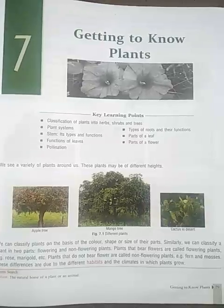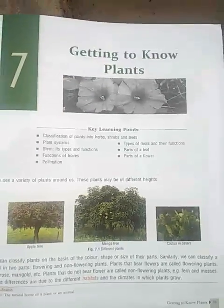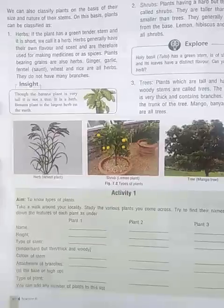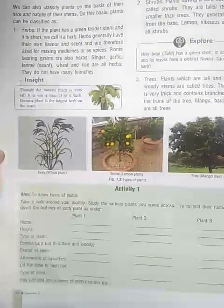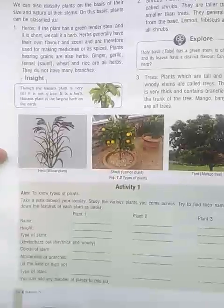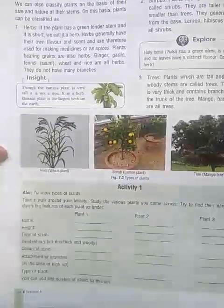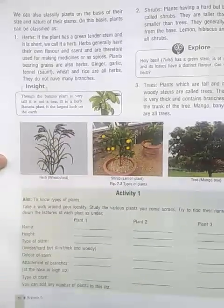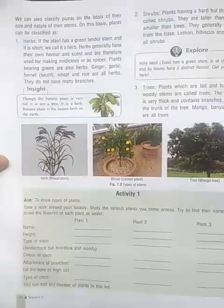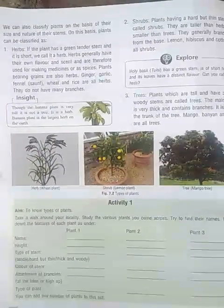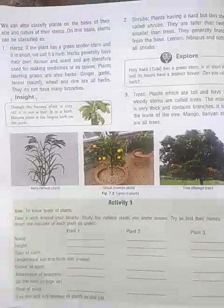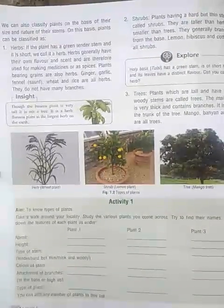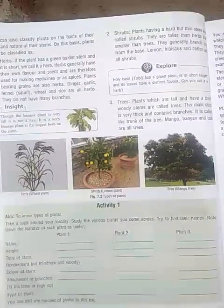We can also classify plants on the basis of their size and nature of stems. On the basis of stems, we can classify plants as herbs. If a plant has a green tender stem, it is short and we call it a herb. Herbs are used for making medicine or as a spice. A herb has a small size and a smooth and soft structure of the plant stems and branches.